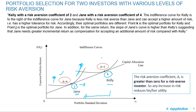The key takeaways from this graph: the slope of the indifference curve is steeper for more risk-averse investors, which is intuitive — to accept more risk, you require a higher expected return. The Risk Aversion Coefficient A is greater than zero for a risk-averse investor, and the more risk averse you are, the higher the value of A.